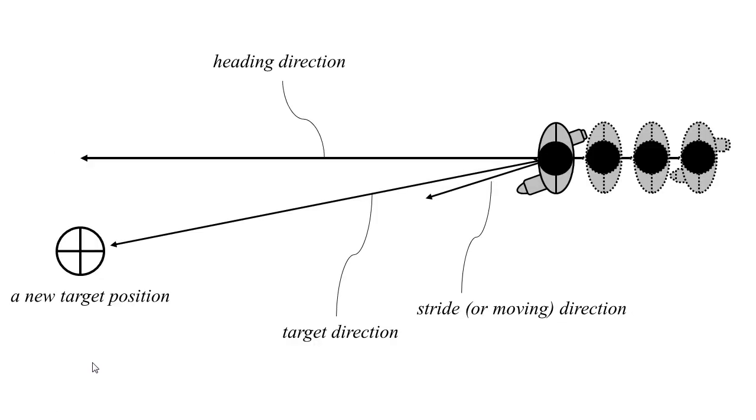In changing the movement direction, the difference between the heading and the target direction is first calculated. If the difference is bigger than the threshold, the heading is changed to have the same value with the target direction, which leads to a directional change of the whole body of an agent. In the other case, a side step is added while going forward until the heading and the target direction become the same.